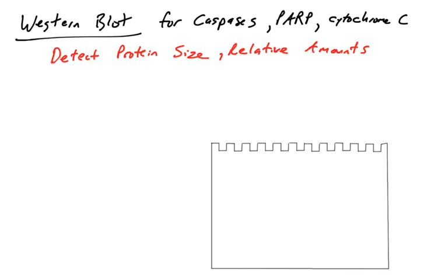A Western blot is a technique used in the lab to detect proteins. You can detect different proteins, the different sizes of those proteins, as well as the relative amounts of those proteins. This is actually very useful in apoptosis because when apoptosis is occurring, there are a number of proteins that change their size.